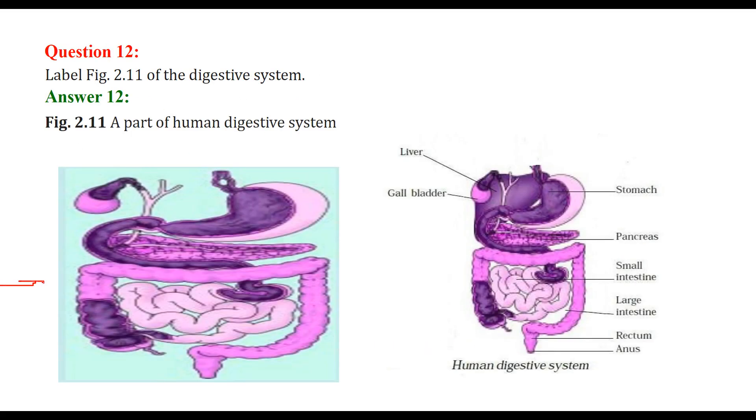This is a figure you have to label. So let us go one by one. This one is the gall bladder. This whole is the liver. This is your stomach. These are your pancreas. This whole is your small intestine. This bigger one is your large intestine. This is your rectum. And finally, this is your anus from where the excreta come out.